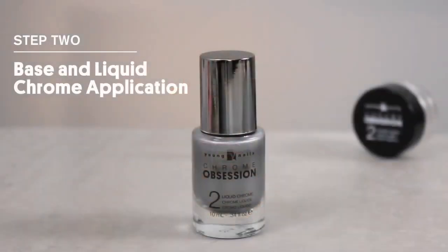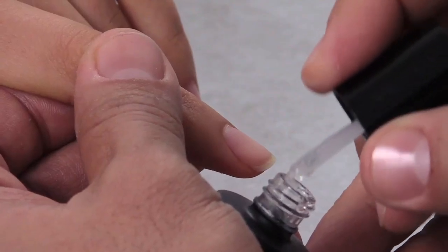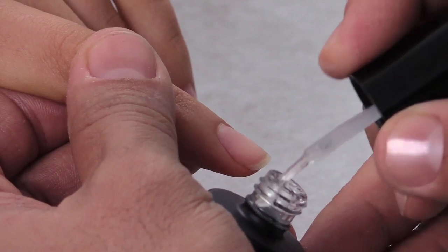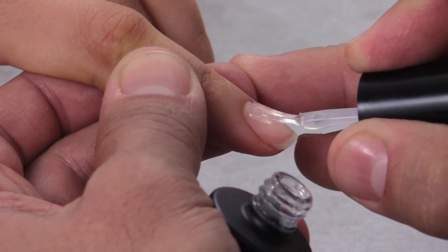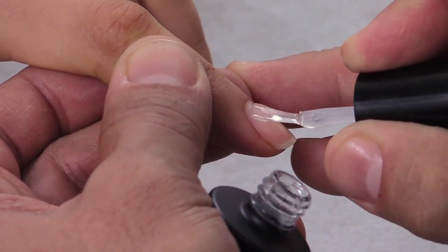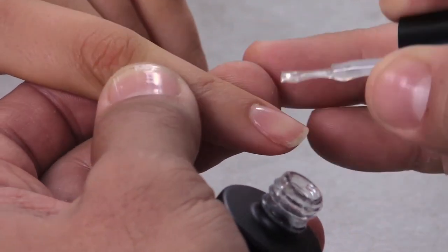We're now ready for application. Base gel is going to act as the foundation to our liquid. We're going to apply a nice thin coat from cuticle to free edge on all our fingers, working from front to back.